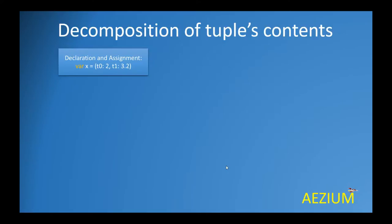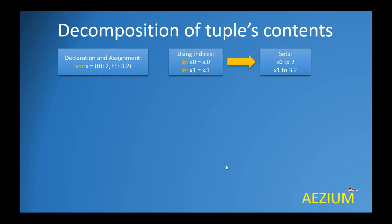When dealing with tuples, it is possible to access the values of a tuple in a process called decomposition. It is also possible to write values to tuple elements. One way to access the elements of a tuple is by using indices. The first element of a tuple is given index 0, the second element is given index 1, and so forth. The important thing is that the sequence of indices starts with 0.